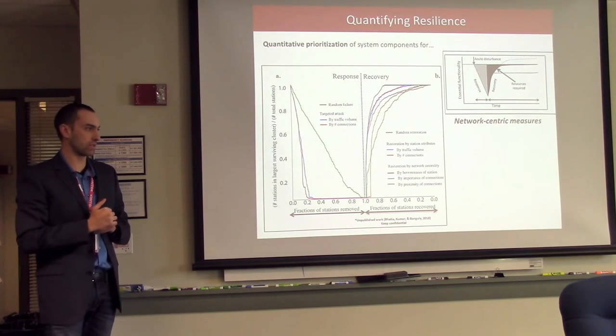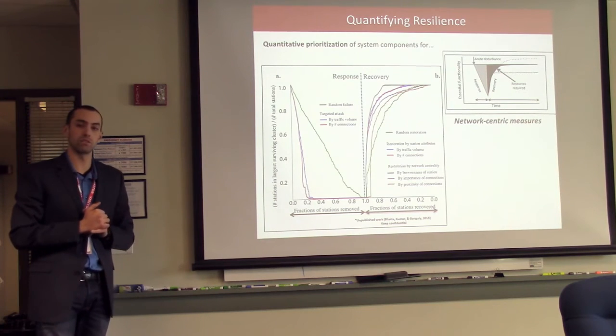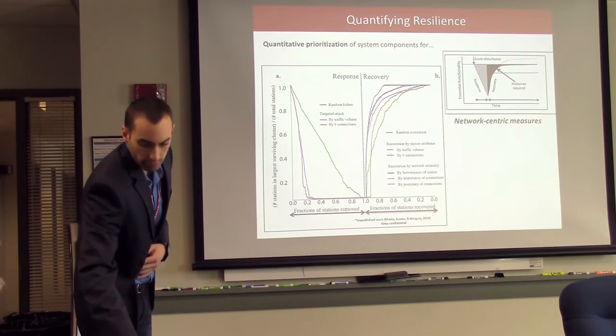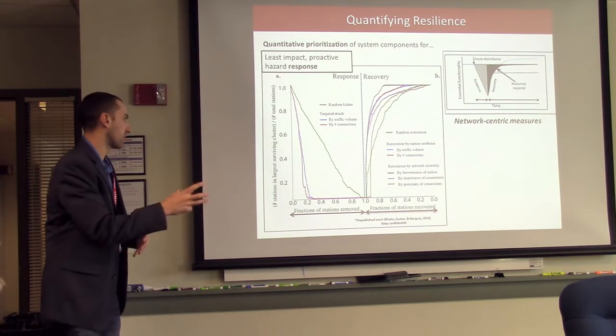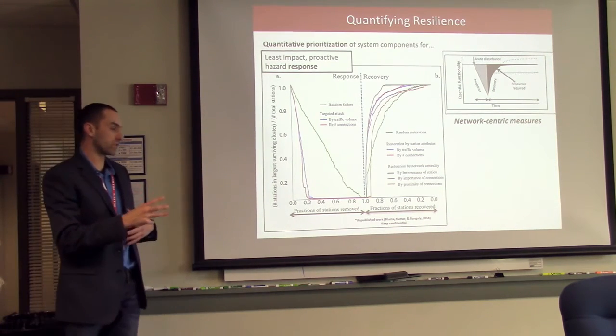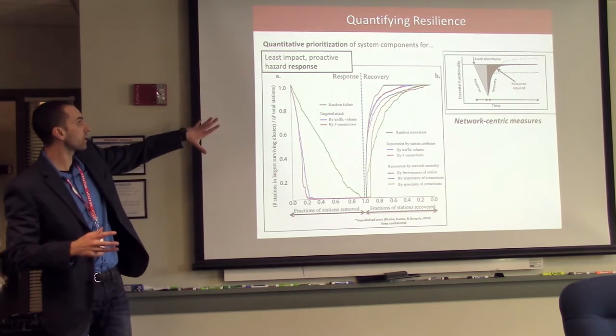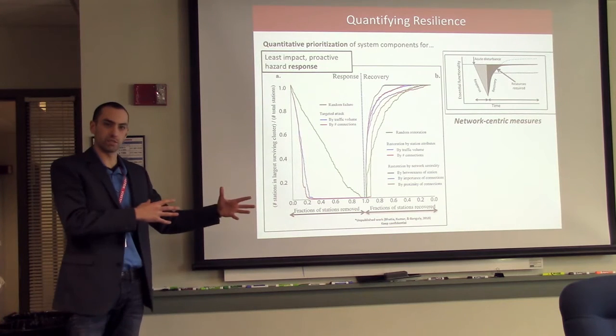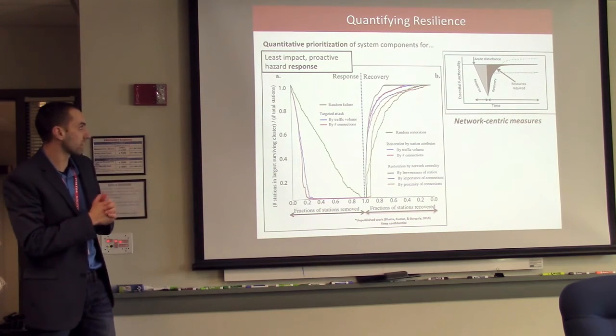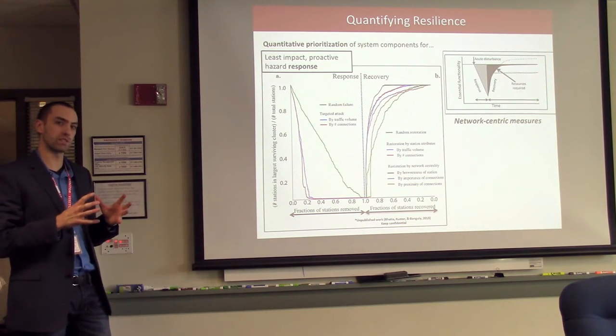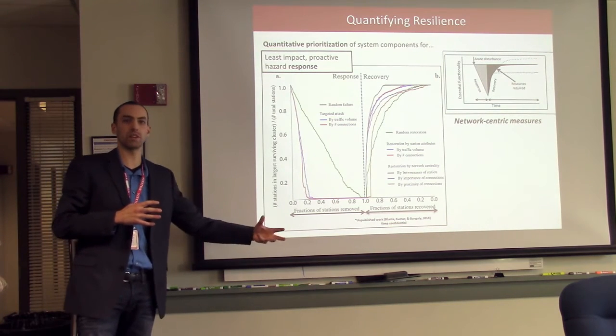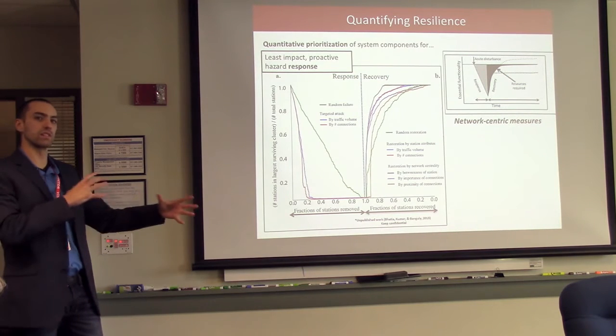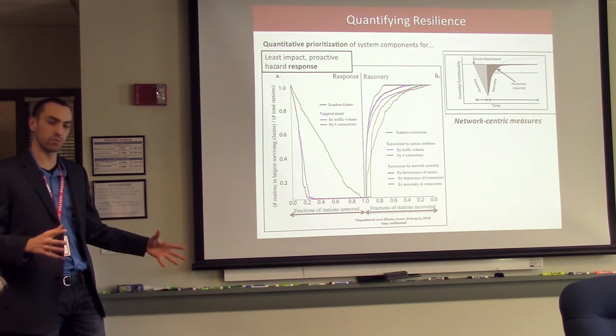So, what we can do is, and again, in a view of the limited budget, or limited resources that we have to do this, what do we tackle first? In terms of responding when a disaster happens, we can use this methodology to figure out the least impact, proactive hazard, or least financially, or economically, or whatever impact, proactive hazard response. So, the graceful taking off line of certain assets, or whatever the case may be to cause the least amount of damage to your overall system when it's happening.